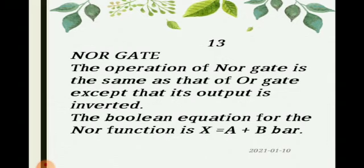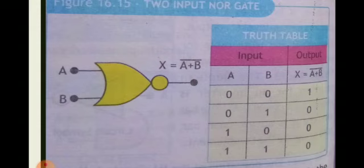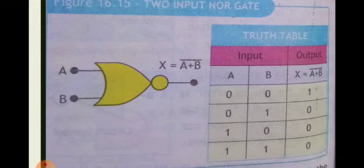The next gate is the NOR gate. The operation of the NOR gate is the same as that of the OR gate, except that its output is inverted. The Boolean equation for the NOR function is x equals A plus B bar — the bar shows the inverted values. The circuit symbol and truth table of the NOR gate are shown on your screen. The circuit symbol is the same as that of the OR gate, with the only difference being a circle, which represents the NOT gate. This shows that the NOR gate is a combination of the OR gate and the NOT gate.